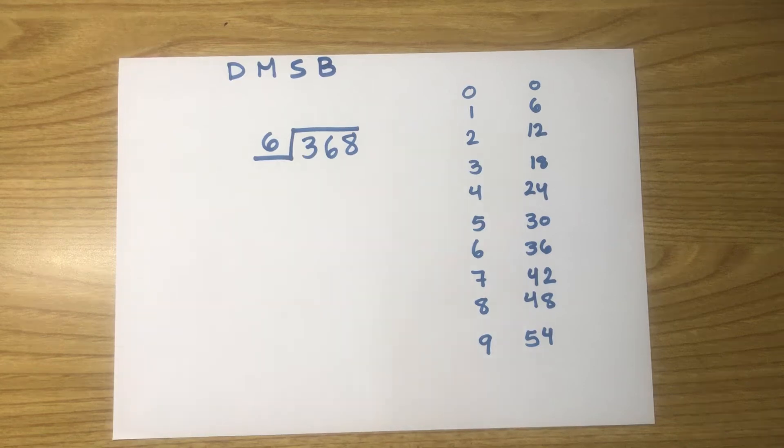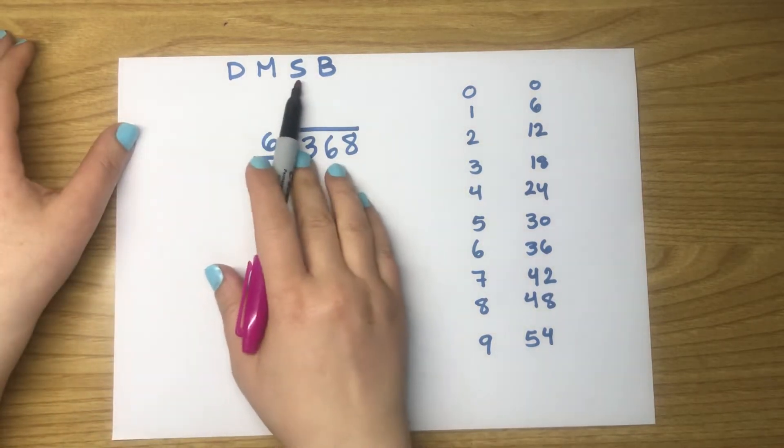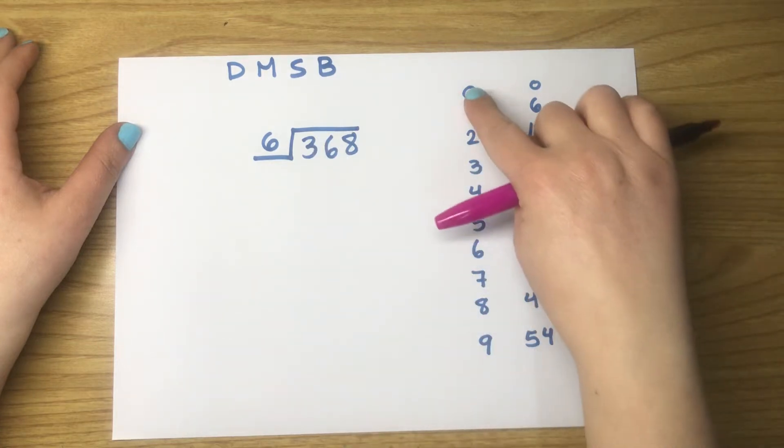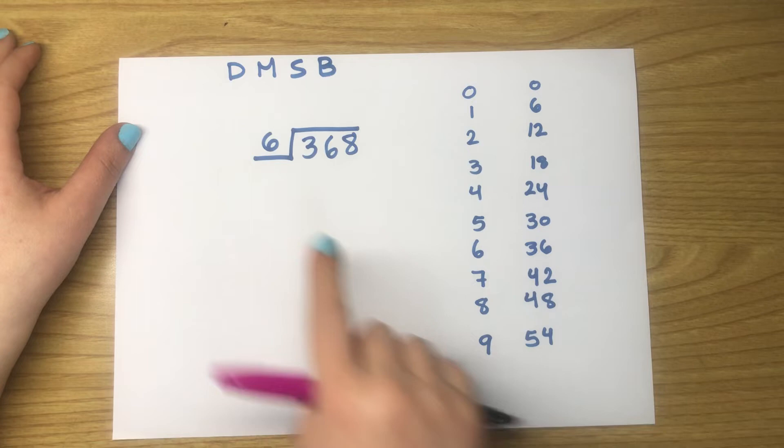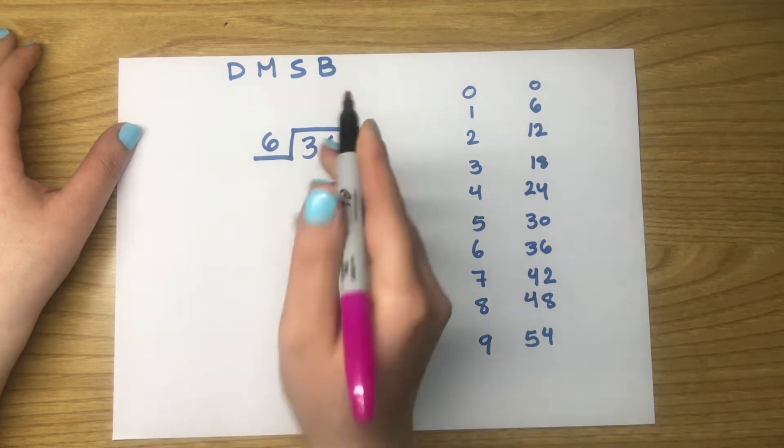Here is another example: 368 divided by 6. Let's remember the steps: Divide, Multiply, Subtract, and Bring down. This is the number of the multiple, and here are the multiples of the divisor, which is 6.